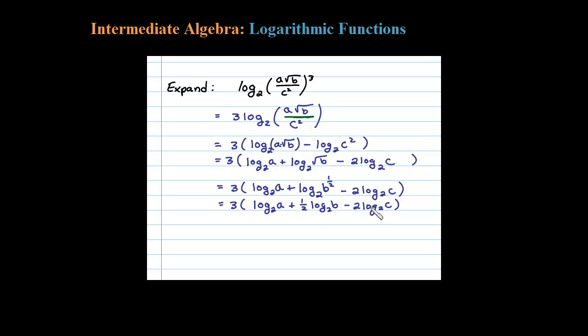Then for the last step here, what I would do is distribute the 3. That would leave me with my final answer: 3 times log base 2 of a plus 3 times 1 half is 3 halves times log base 2 of b, and then 3 times negative 2 is minus 6 times log base 2 of c.